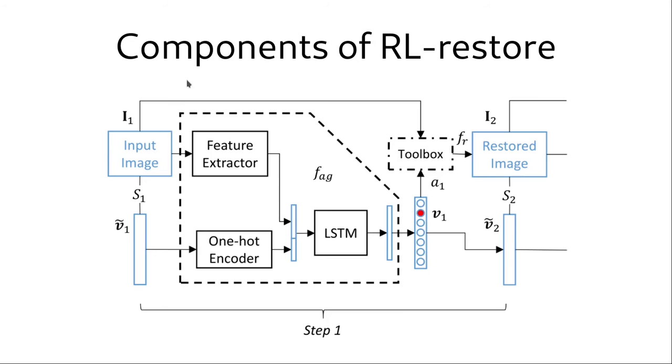Now with that understanding of reinforcement learning and the deep Q learning algorithm, let's look at the components of RL restore in a bit more detail. Firstly, we can see that the input image is being given to a feature extractor. This feature extractor is a convolutional neural network that takes in an input image and gives out a 32-dimensional feature vector. We also have a one-hot encoder that gives a value vector as the output. The value vector and the feature is concatenated and given as input to the LSTM. And the output is in fact the Q value. Based upon the Q value, we can determine which action to take and this action is given to the toolbox. The toolbox then picks the appropriate tool and uses it on the input image to give a fully or partially restored image as the output. And this process repeats until a satisfactorily restored image is achieved.